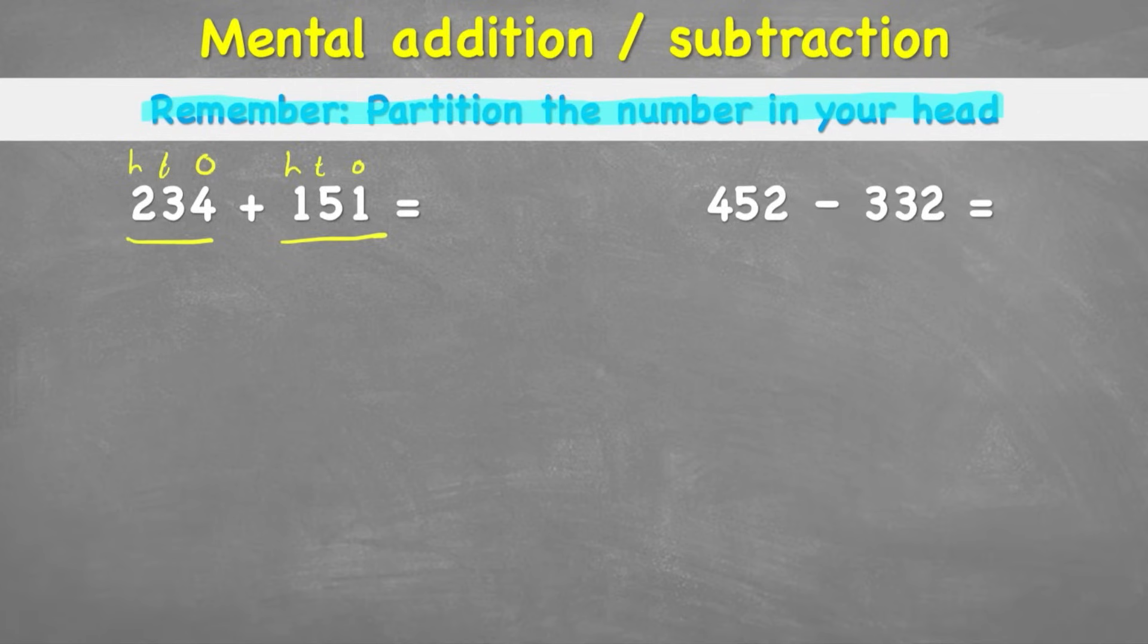So what I'm going to do in my head, I'm going to do exactly what I would do with column method, but I'm going to do it in my head. And that is, start at my smallest value. So I'm going to look at my ones first of all. And in my head, I would remember that 234 had 4 ones and 151 had 1 one. So therefore, 4 add 1 equals 5. So I would remember that my answer had 5 ones.